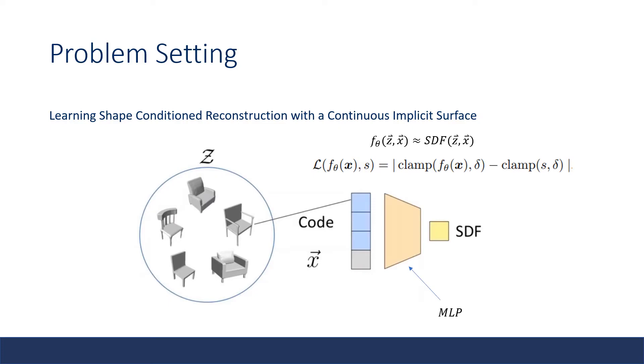DeepSDF regresses the sign distance function using a fully connected neural network, and this function takes input as XYZ coordinate, a shape code Z, and outputs the predicted SDF of that particular position conditioned on the shape code.